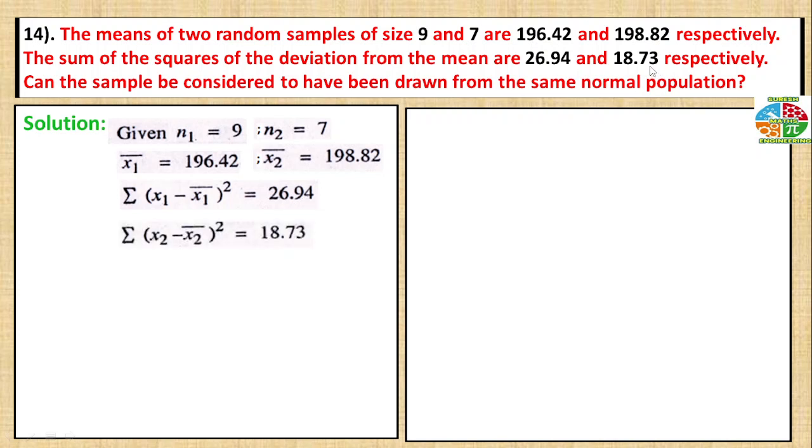Similarly, for the second sample, the sum of squares is 18.73. The pooled variance s squared equals summation of (x1 minus x1 bar) squared plus summation of (x2 minus x2 bar) squared divided by n1 plus n2 minus 2.